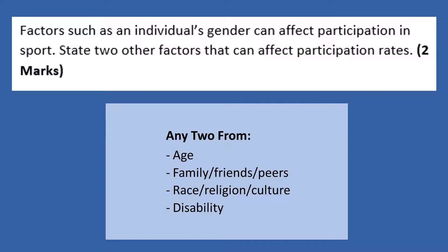Obviously the answer given in the question is gender, because females are underrepresented in terms of their participation in sport. We could pick any two other answers, such as age, because older people in particular find it harder to have opportunities to participate. You might say family, friends, or peers, because our relationships with these people have an impact on the sports we take part in. Race, religion, and culture also have an impact on participation rates, and finally disability, because just like females, disabled people are also underrepresented in terms of participation rates.